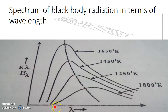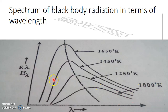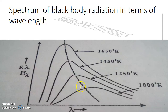At any given temperature, the intensity of radiation increases with increasing wavelength up to a certain maximum point. Beyond that maximum, as lambda continues to increase, the intensity E-lambda decreases. So E-lambda first increases and then decreases with lambda at a fixed temperature.